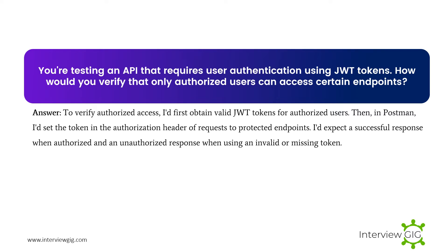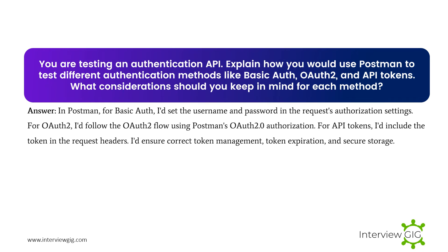Scenario question: You're testing an API that requires user authentication using JWT tokens. How would you verify that only authorized users can access certain endpoints? To verify authorized access, I'd first obtain valid JWT tokens for authorized users, then in Postman I'd set the token in the authorization header of requests to protected endpoints. I'd expect a successful response when authorized, and an unauthorized response when using an invalid or missing token.